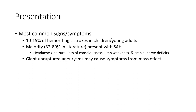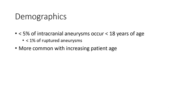Most common signs and symptoms: 10-15% hemorrhage, hemorrhagic stroke in childhood. Majority present with subarachnoid hemorrhage, headache, seizure, loss of consciousness, limb weakness, and cranial nerve deficiency. A ruptured aneurysm may present with massive pain.